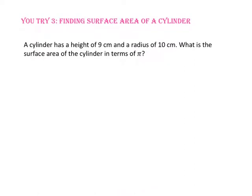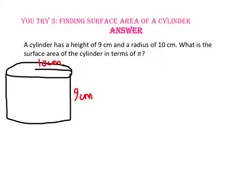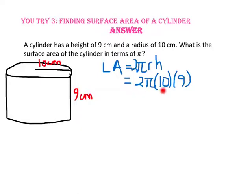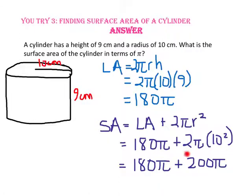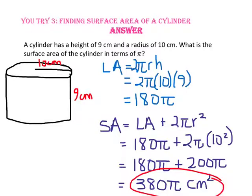Pause the video and do you try number three. A cylinder has a height of nine centimeters and a radius of 10 centimeters. What is the surface area in terms of pi? The lateral area is two times 10 times nine times pi: 20 times nine is 180, so the lateral area is 180 pi. The area of the two circular bases is two times pi times 10 squared, which is 200 pi. Adding 180 pi plus 200 pi gives a surface area of 380 pi centimeters squared.